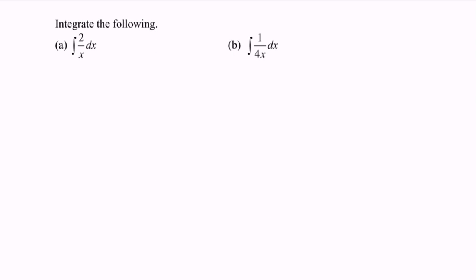Here we have situation b: integrate 1 over 4x with respect to x. If we integrate, we will have ln|4x|. Focus on this part — do remember to differentiate, and we will have 4. So meaning that we divide by 4, plus c.